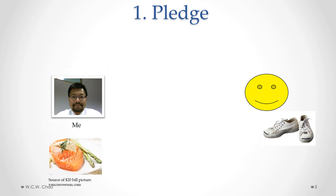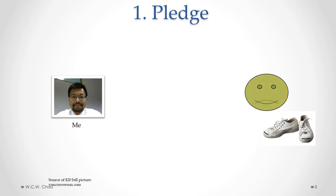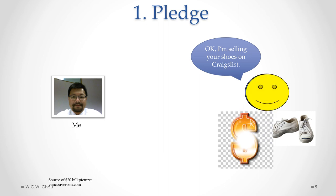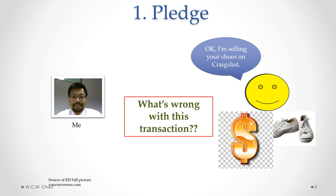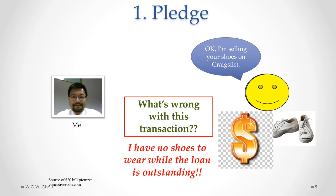I use the money to buy my lunch and eat it. Then next week rolls around and I say sorry, I can't pay you back. So you say okay, I'm selling your shoes on Craigslist. You sell them, get money for them, and keep that money to pay off what I owe you. That seems to work fine, but think — what's wrong with this transaction? It's a practical issue.